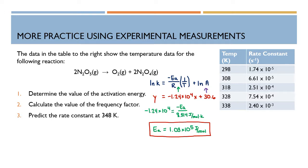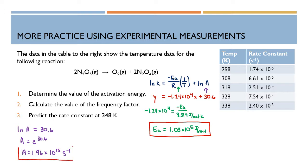I know my R — it's a constant, that's easy. The next thing I want to do is find the frequency factor. I'm going to set my b's equal to each other: the natural log of A equals 30.6, which means A equals e to the power of 30.6, which means A equals 1.96 times 10 to the 13th per second.